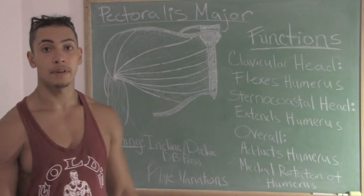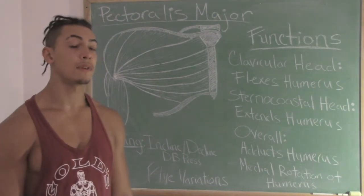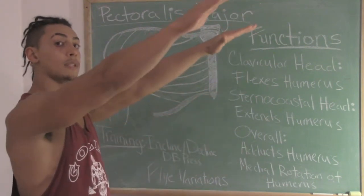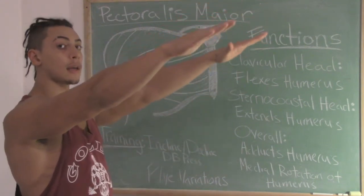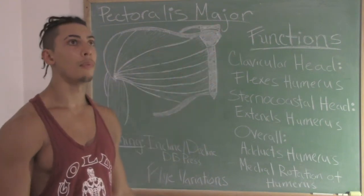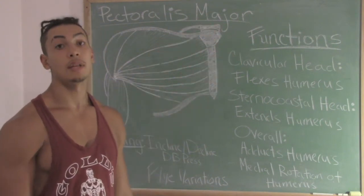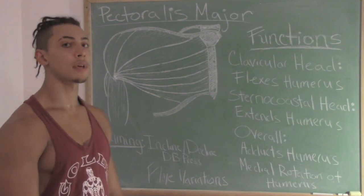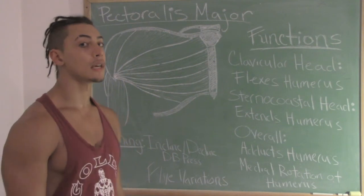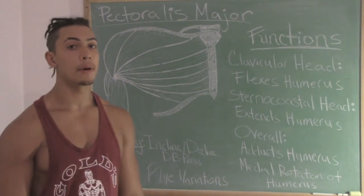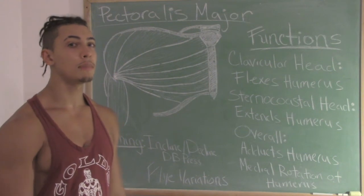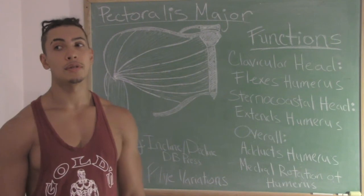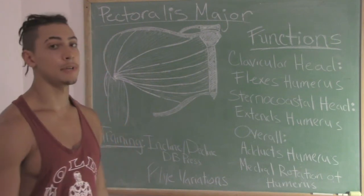Starting with the clavicular head: thinking back to its specialized function of humeral flexion, this position looks like an incline press. A great way to train the clavicular head would be a press on a shallow incline. Personally, I think an incline dumbbell press is preferable to a barbell incline press, because dumbbells allow you to work unilaterally and also have a greater range of motion — but that's just an opinion.